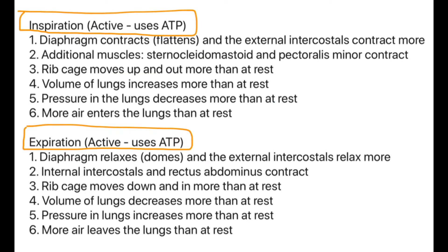Looking at the mechanics of breathing during exercise compared to rest — inspiration is still active, still using ATP for muscular contractions. The diaphragm contracts and flattens, and the external intercostals contract more than at rest. The additional muscles — the sternocleidomastoid and pectoralis minor — also contract. The ribcage moves up and out more than at rest, increasing lung volume and decreasing lung pressure more than at rest, so more air can enter the lungs.